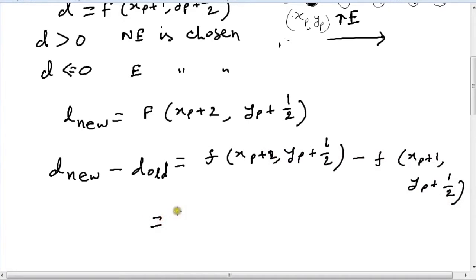Now if we substitute these values into the actual function, that is to say it becomes a(xp plus 2) plus b(yp plus half) plus c minus a(xp plus 1) minus b(yp plus half) minus c.